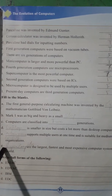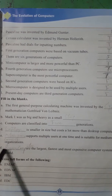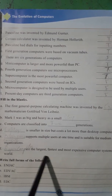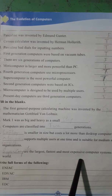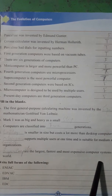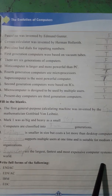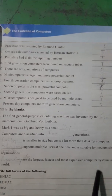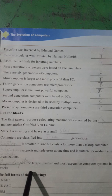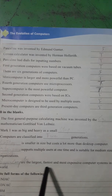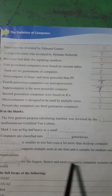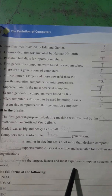Next: dash are the largest, fastest and most expensive computer system in the world. Who is the largest, fastest and most expensive computer? That is the supercomputer.